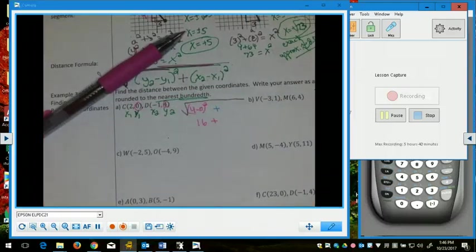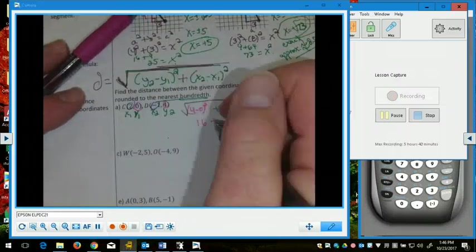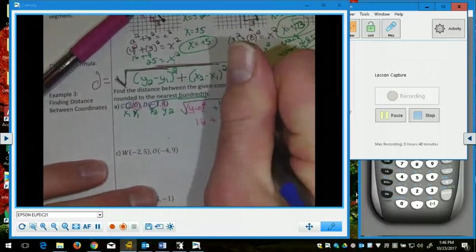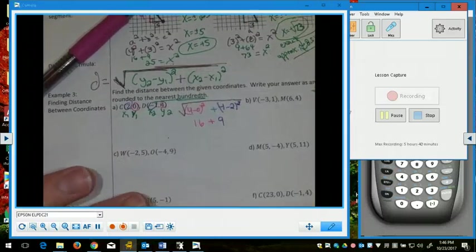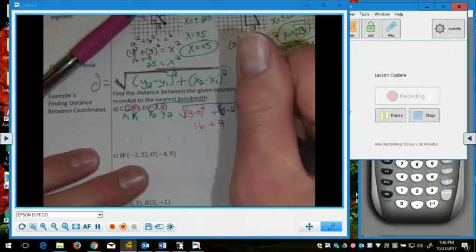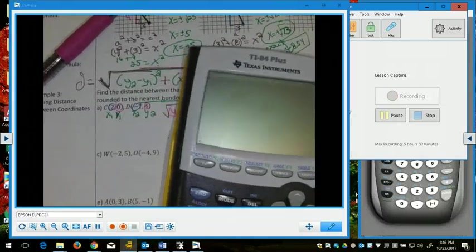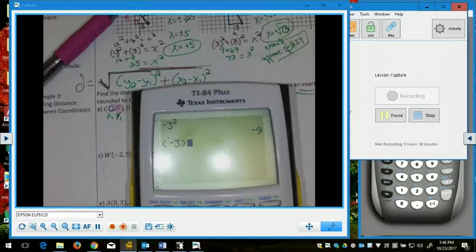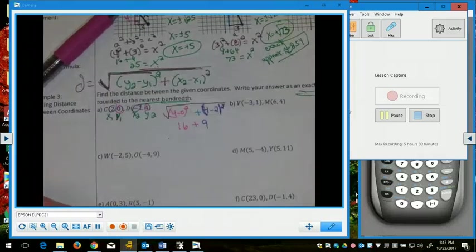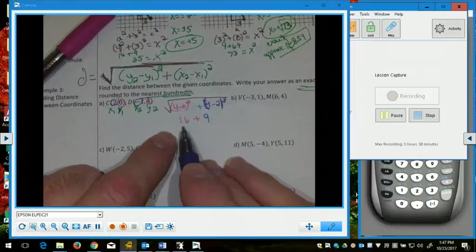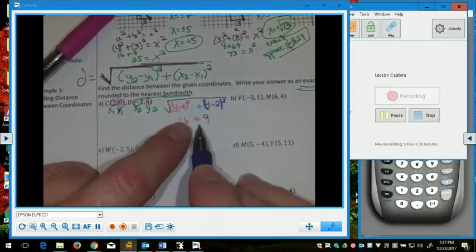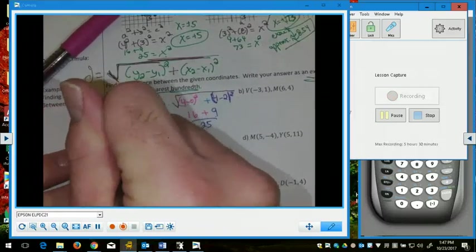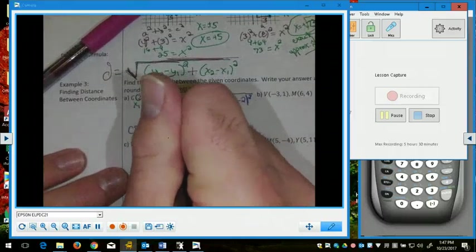I'm also going to have to do x sub 2 minus x sub 1. So negative 1 minus 2, which is negative 3. Negative 3 squared is 9. You can write that out if you want negative 3, but it better be in parentheses. If you put negative 3 or opposite of 3 in your calculator, I think we've had this discussion before, opposite of 3 squared is the opposite of 9. But negative 3 squared is 9, because negative times negative is positive. So now that I subtracted the y's and squared them, subtracted the x's and squared them, I add the two numbers together, and then I can take the square root, which gives me 5. The distance from C to D is 5 units.